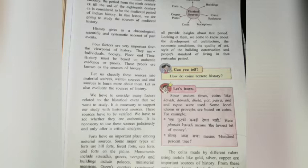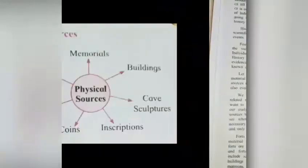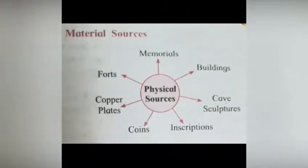Sources of History are classified into three types: material sources, written sources, and oral sources. Now let's see material sources in detail.